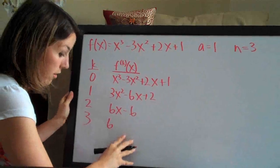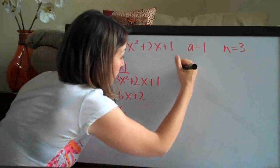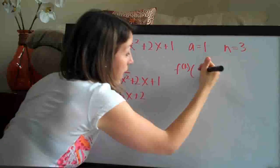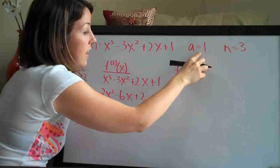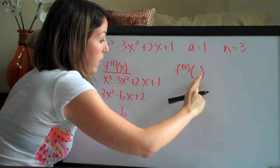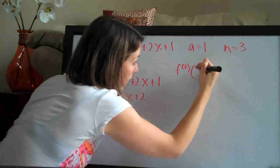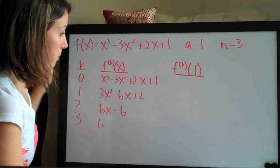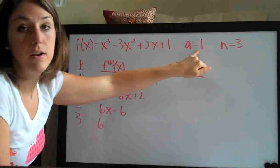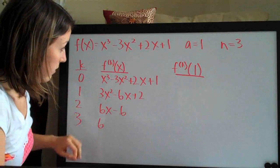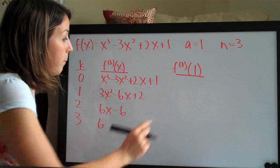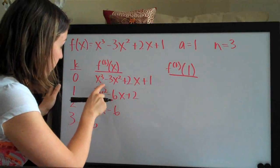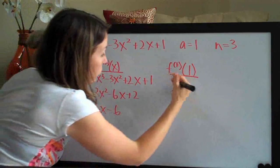That's the second column. The third column is f_k of a, but since a is 1, we can go ahead and write f_k of 1. This is where we plug in our number for a into each of these. So you can see here that if we plug in 1 to this first function here...